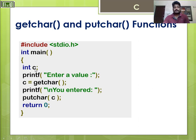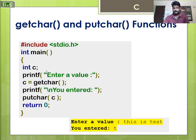Here is an example for getchar and putchar. An integer variable c is declared. printf prompts 'enter a value', then getchar reads the input. printf prints 'you entered', then putchar outputs the character. The result shows that when you input 'this is a test', the first available character is printed. This is the explanation for getchar and putchar.